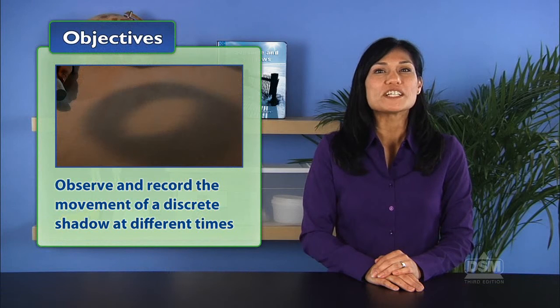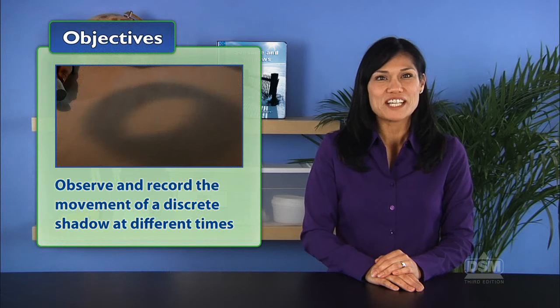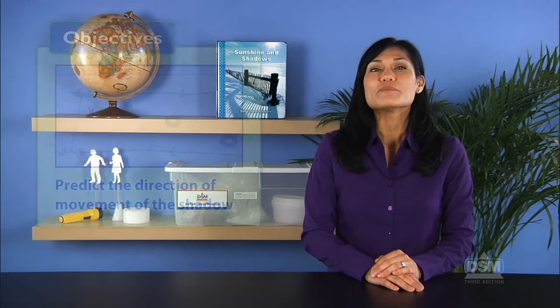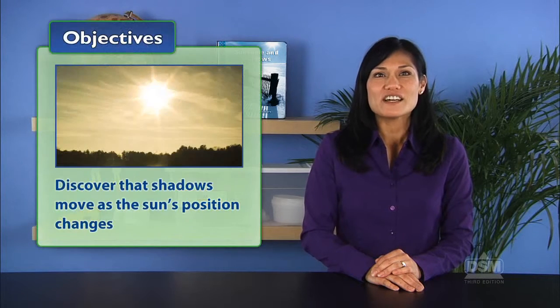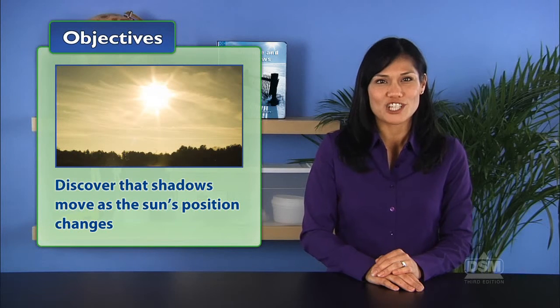In Activity 7, A Separate Shadow, students first observe and record the movement of a discrete shadow at different times of the day. They then predict the direction of movement of the shadow and finally discover that a shadow moves as the sun's position changes.